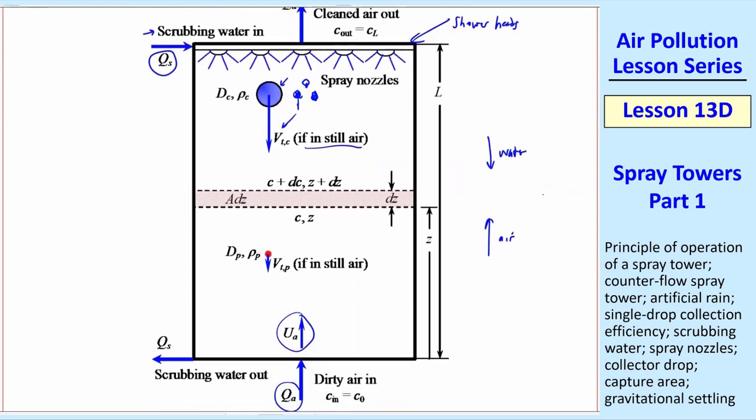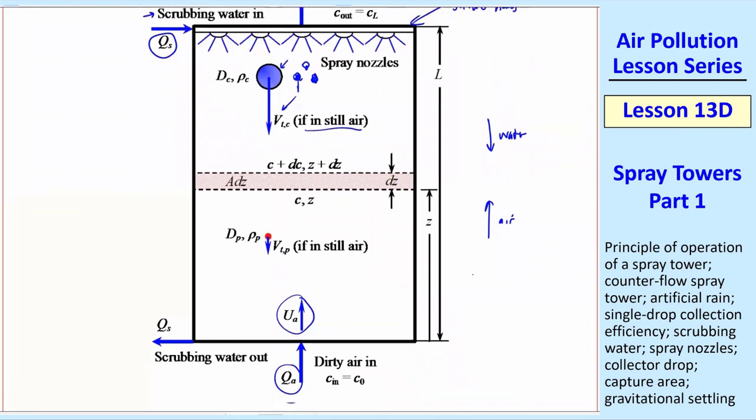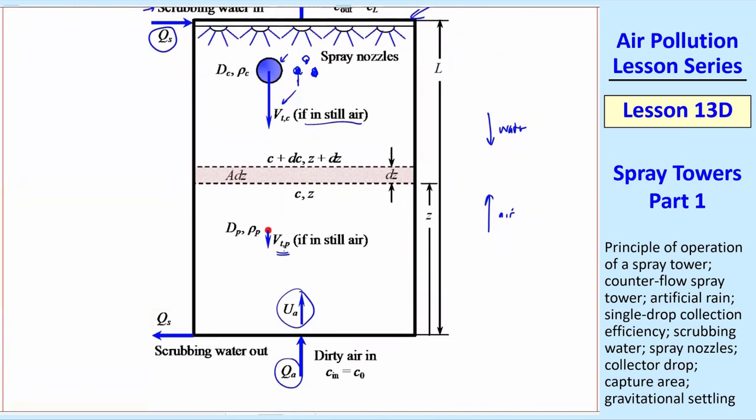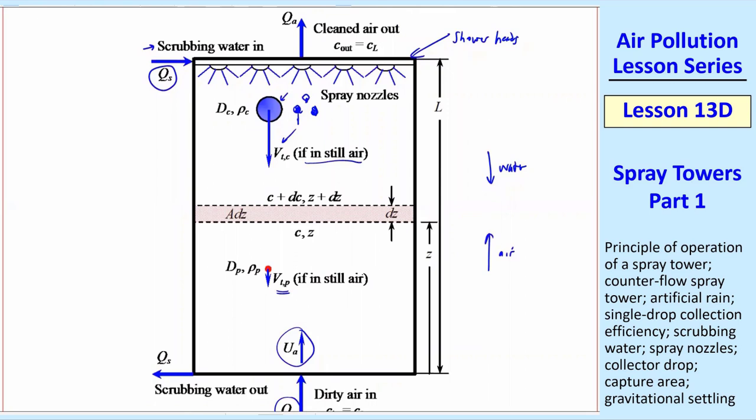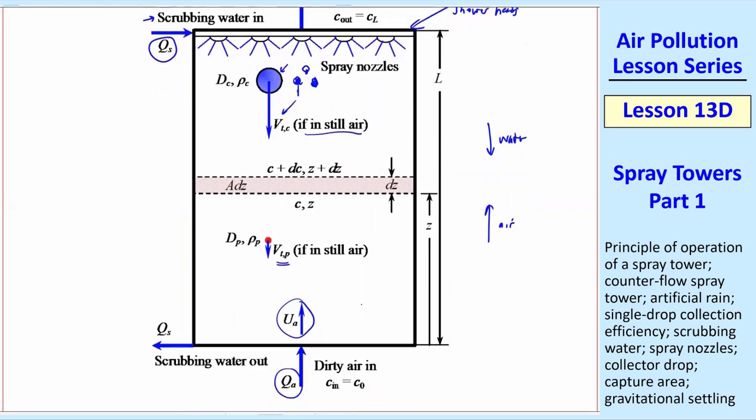Now this air has dusty particles in it, some aerosol particles that we're trying to remove. Those particles would fall at a much smaller speed VTP if they were in still air. But this is not in still air. So you have to do a Galilean transformation and consider that the air is moving up, droplets are moving down. If you're in an absolute reference frame, just looking at this tower, you would see the drops falling at VTC minus UA and the particles falling at VTP minus UA, which will actually be a negative number.